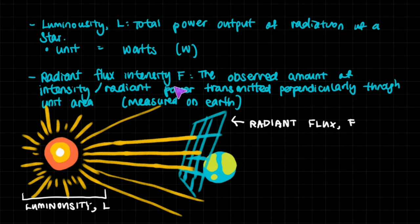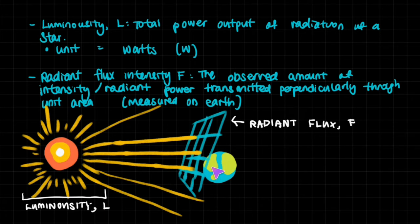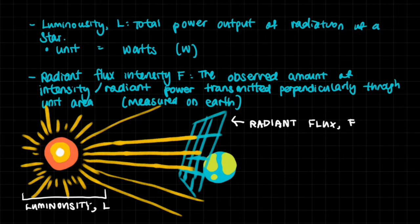Radiant flux intensity, on the other hand, is the observed amount of intensity — the radiant power transmitted perpendicularly through a unit area, measured on Earth. The rays travel outward and by the time they reach us they've diminished a lot. The power is very strong near the star but it spreads out and we get a very diluted version of it. So it's the energy measured on Earth per second per unit area, and the unit is watts per meter squared (W m⁻²).